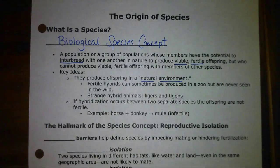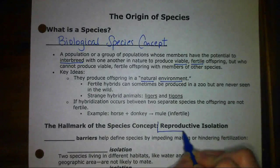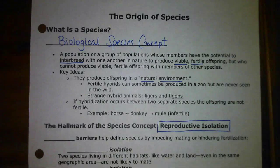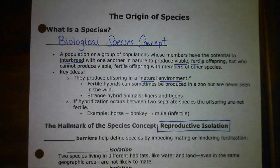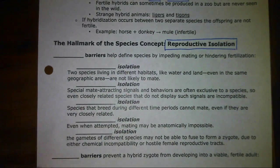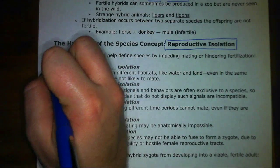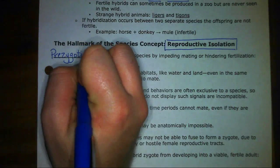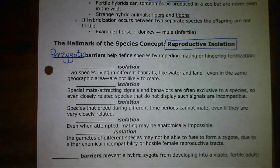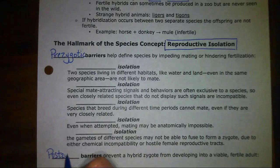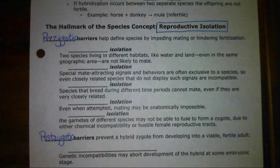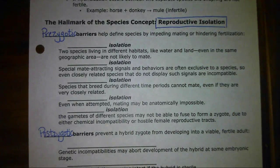Most populations are considered two different species when they are reproductively isolated from one another. Reproductive isolation is a key idea — meaning two populations cannot reproduce with one another; they are isolated from each other for some particular reason. Some of the barriers to reproduction are classified as prezygotic barriers, versus some barriers which are considered to be postzygotic barriers.